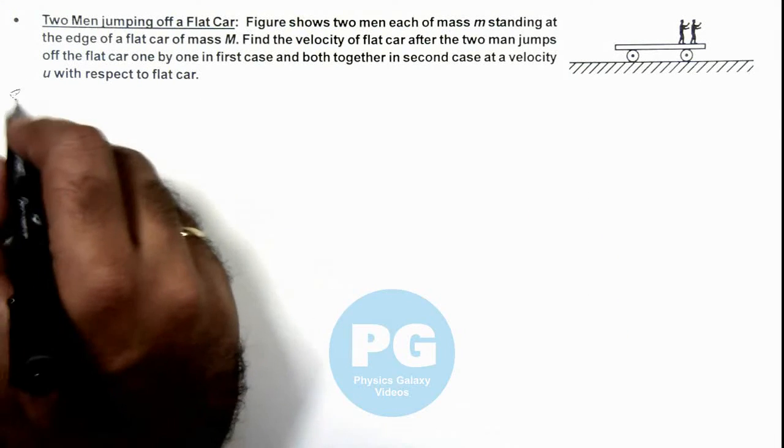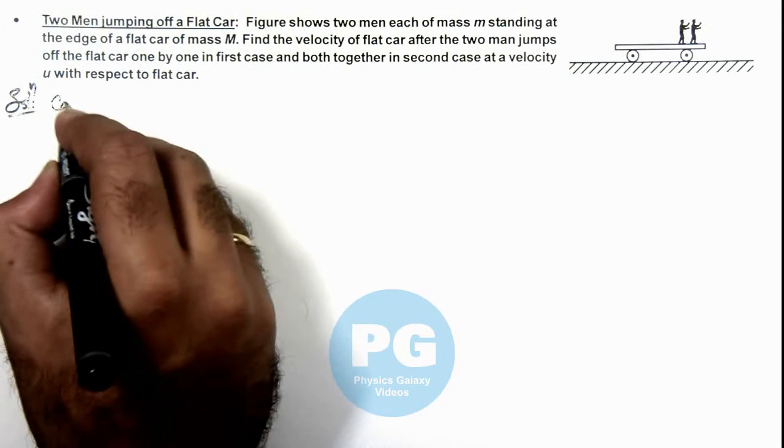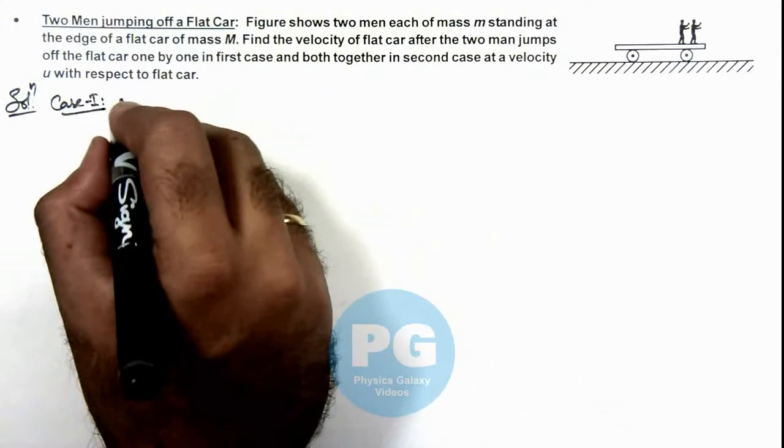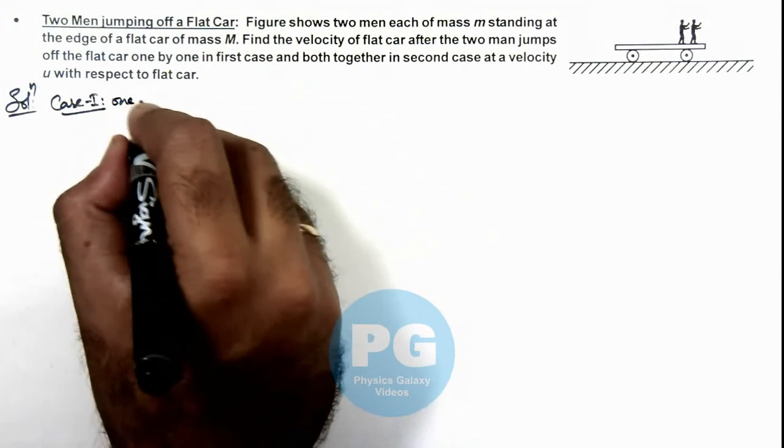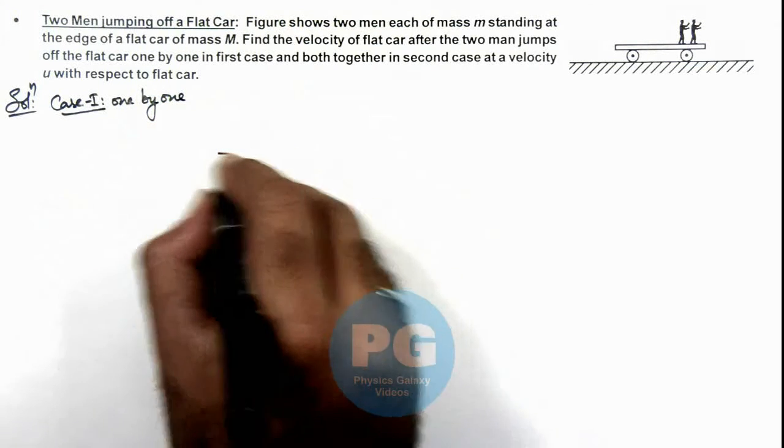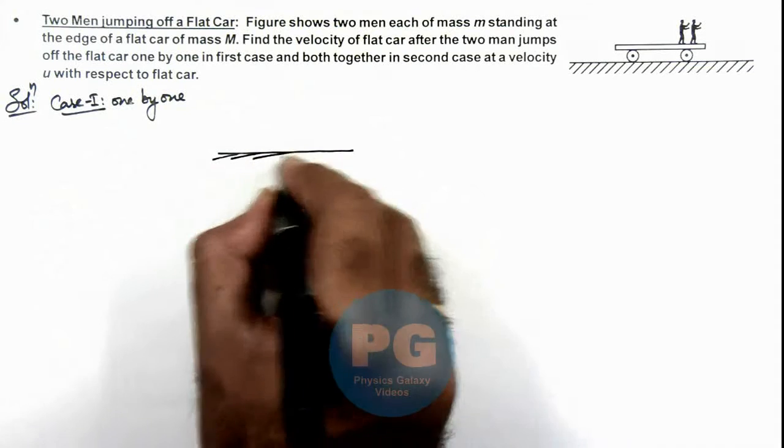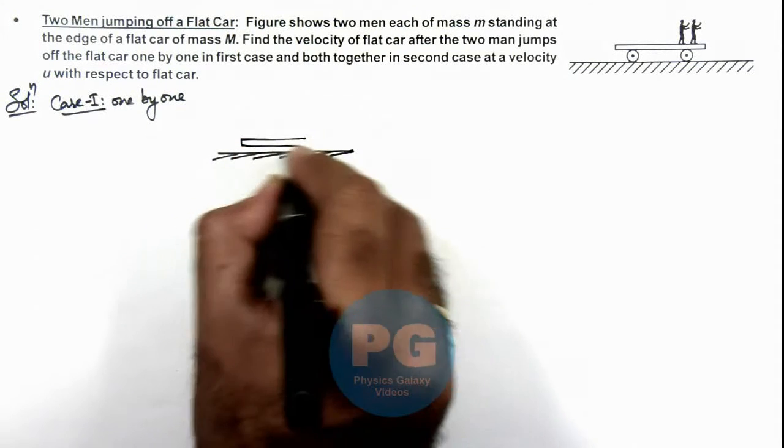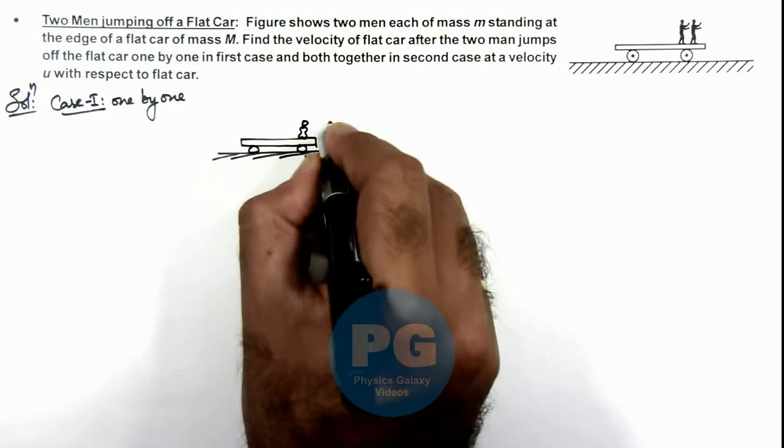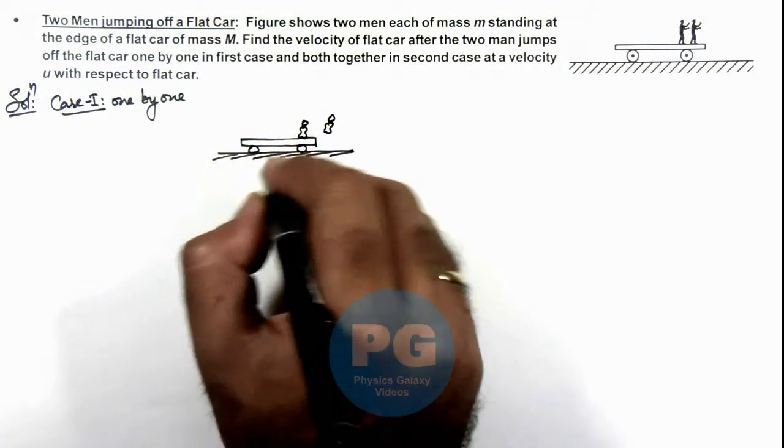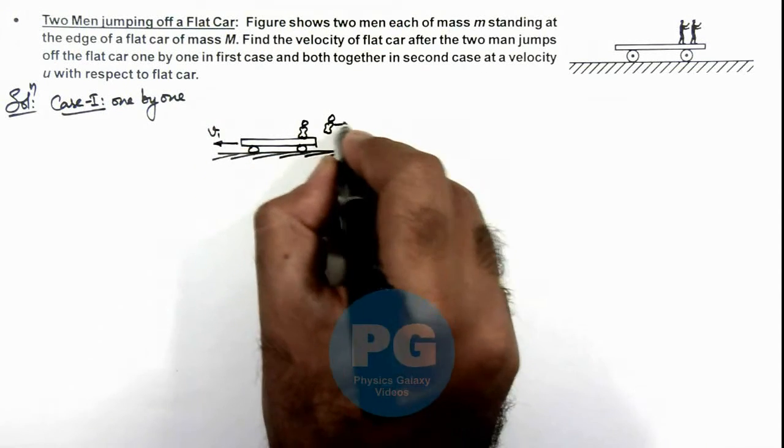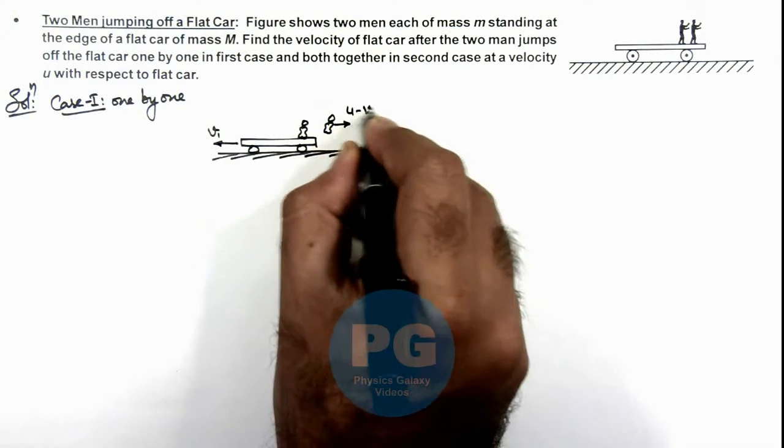So let's discuss the two cases one by one. Case 1 will be taking first when the men will jump one after another or one by one. Here we can see on the ground this is the flat car. One man jumps off and one remains on the car. With a speed u, then the car will attain a velocity v1 and the man would be having a speed u minus v1.